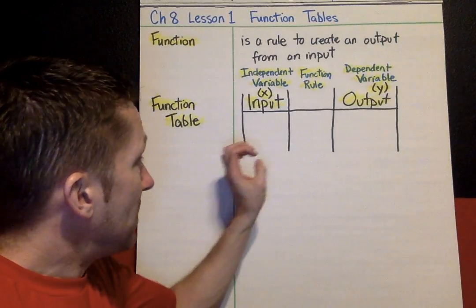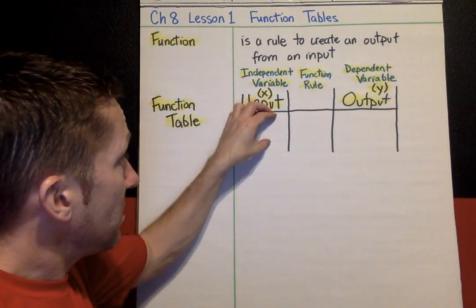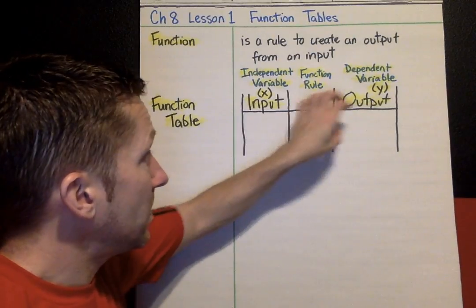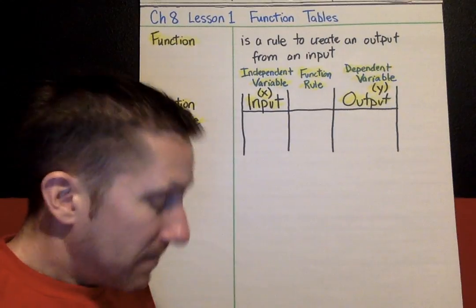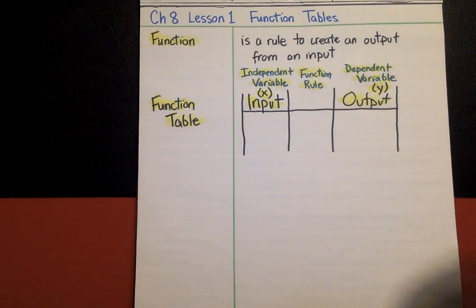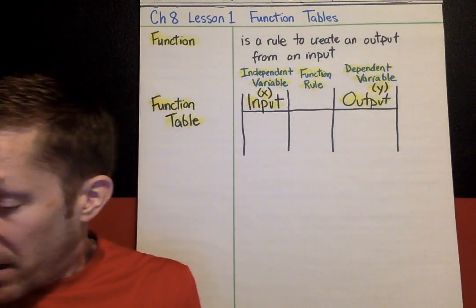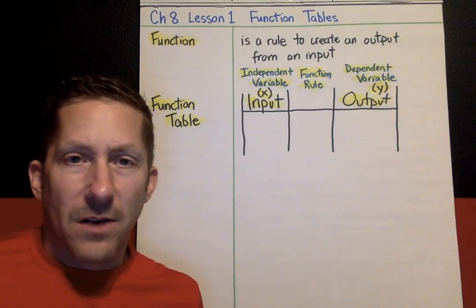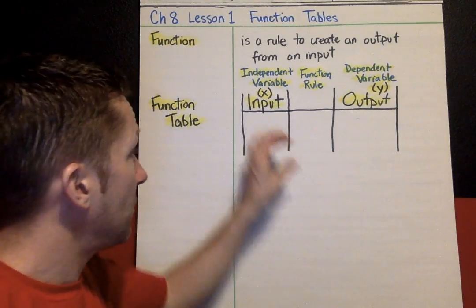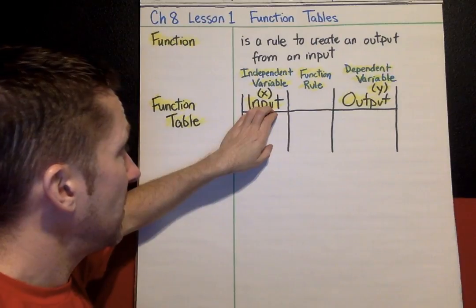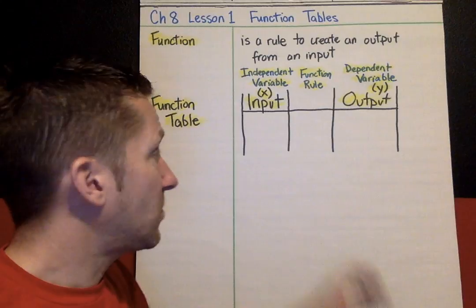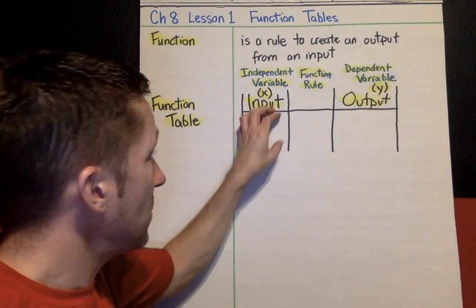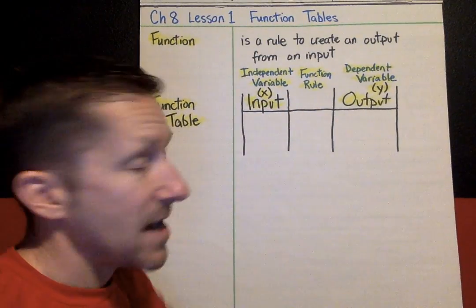Basically, input, you're going to apply a rule to the input, and then something comes out the other side. That's your output. We're going to look at solving two different types of function tables. When you have the input and you have the function rule, kids like those better because it's just straightforward. You have some value, you put it into the rule, and you get an output.